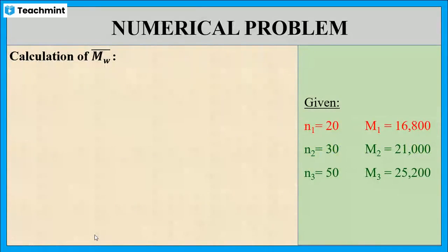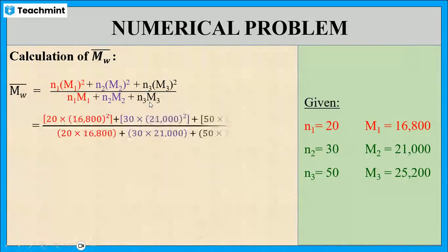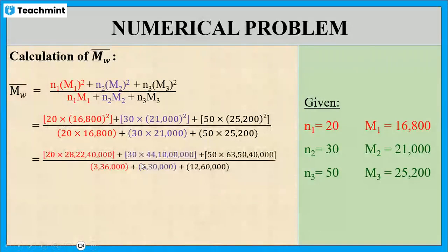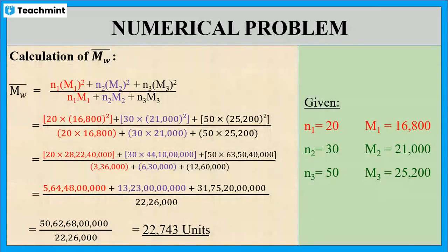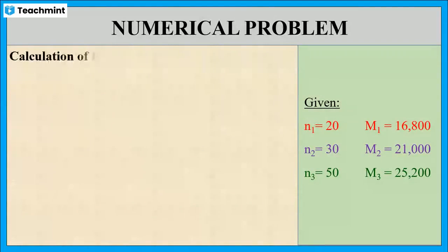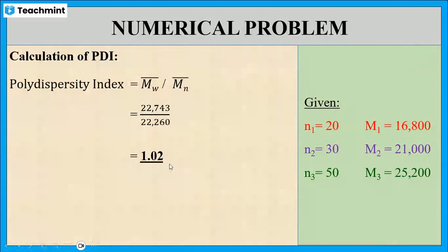Next, we have to calculate Mw bar. The formula is: Mw bar equals N1·M1² plus N2·M2² plus N3·M3², whole divided by N1·M1 plus N2·M2 plus N3·M3. Substituting all values, the final value is 22,743 units. Then the polydispersity index is calculated as Mw bar divided by Mn bar: 22,743 divided by 22,260, and the final value is 1.02, which is greater than 1.